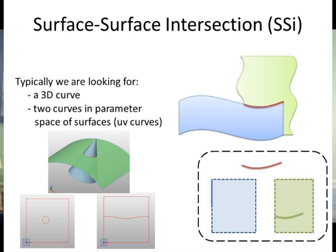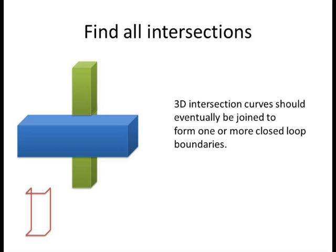We can start with intersections. The typical result of a surface-surface intersection will be a 3D curve. However, we also need to keep track of the corresponding curves in the parameter space of each surface. So along with the 3D curve, we have two 2D parametric space curves. The 3D surface-surface intersections should eventually join to form a closed loop where the two-shaped boundaries touch.